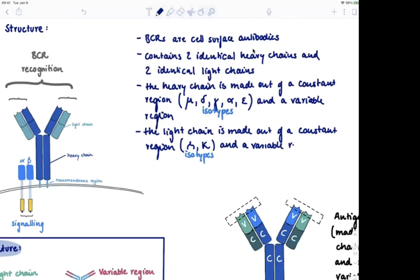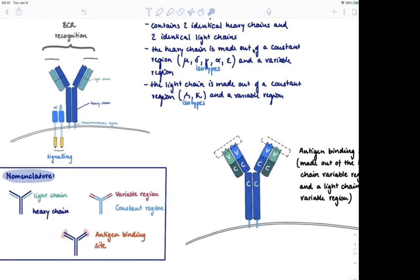In contrast, the isotypes of the light chain do not have any functional consequence. So it really doesn't matter. Some have Lambda, some have Kappa, but there is no clinical significance.